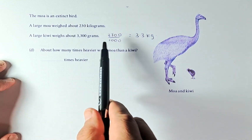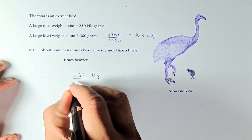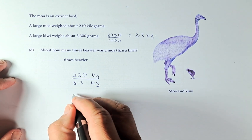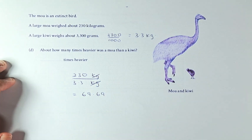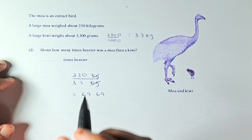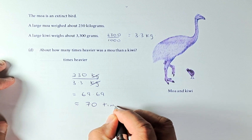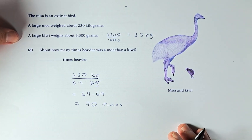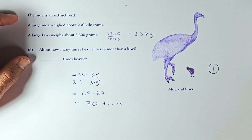To compare the moa to the kiwi bird, you take the weight of the moa — 230 kg — and divide by 3.3 kg. Put it in the calculator and it comes out as 69.69 times. The kg units cancel, so 230 divided by 3.3 is 69.69. The answer to how many times heavier the moa was than the kiwi is approximately 70 times. If you put 69 in this exam, it is also acceptable. This question is outcome 1.